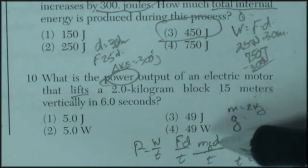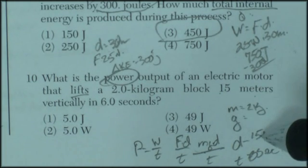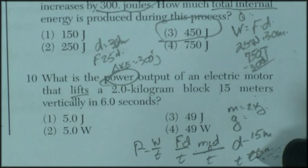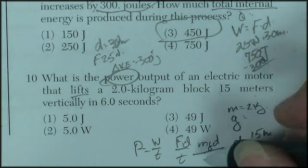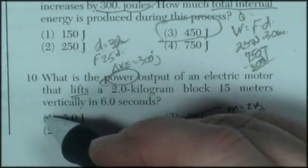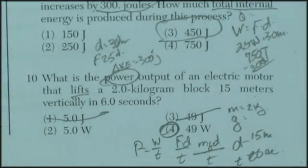Well, I've got mass of 2 times g, which is, let's call it 10, so that's 20. Distance of 15, so that's, what, 300. Divided by 6. So I'm looking at 300 divided by 6. So maybe 50-ish. Well, look at this. First of all, I'm looking for power. So I need watts. So these two are wrong to begin with. So it's either 5 watts or 50 watts. I'm going with 50 watts.